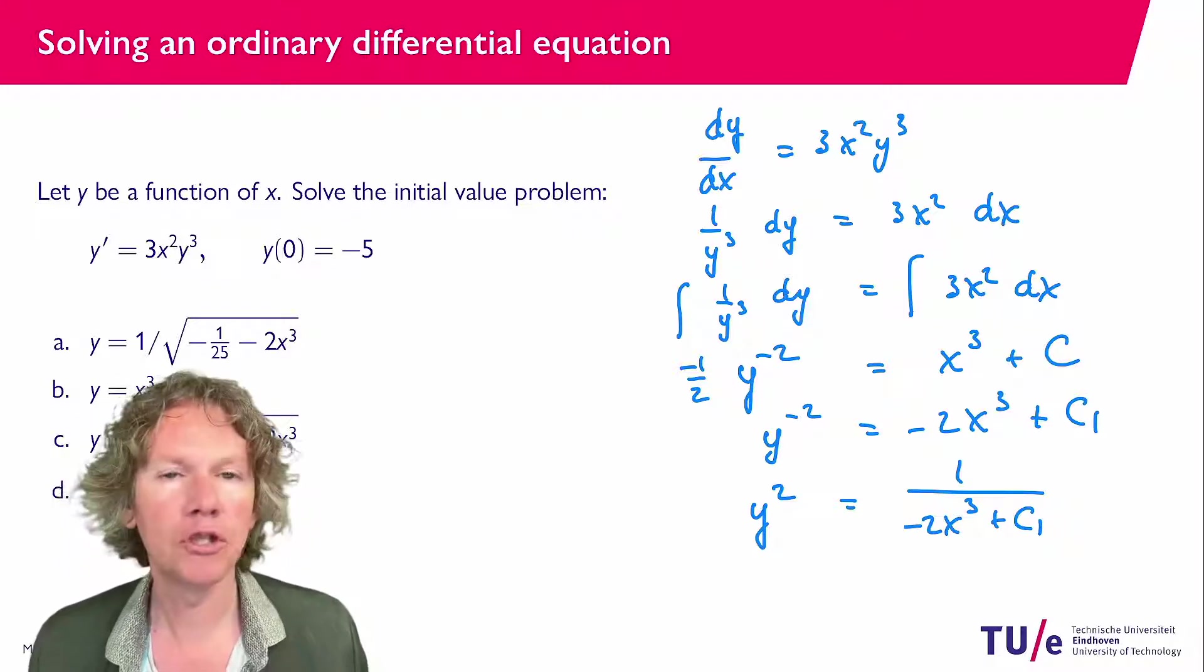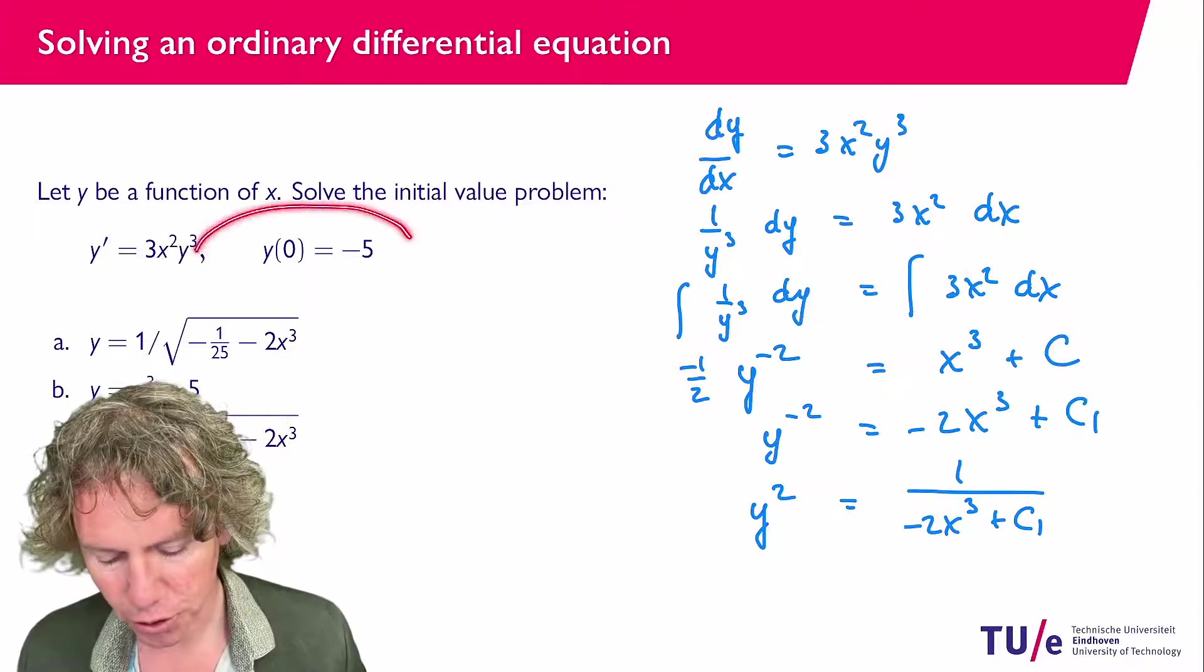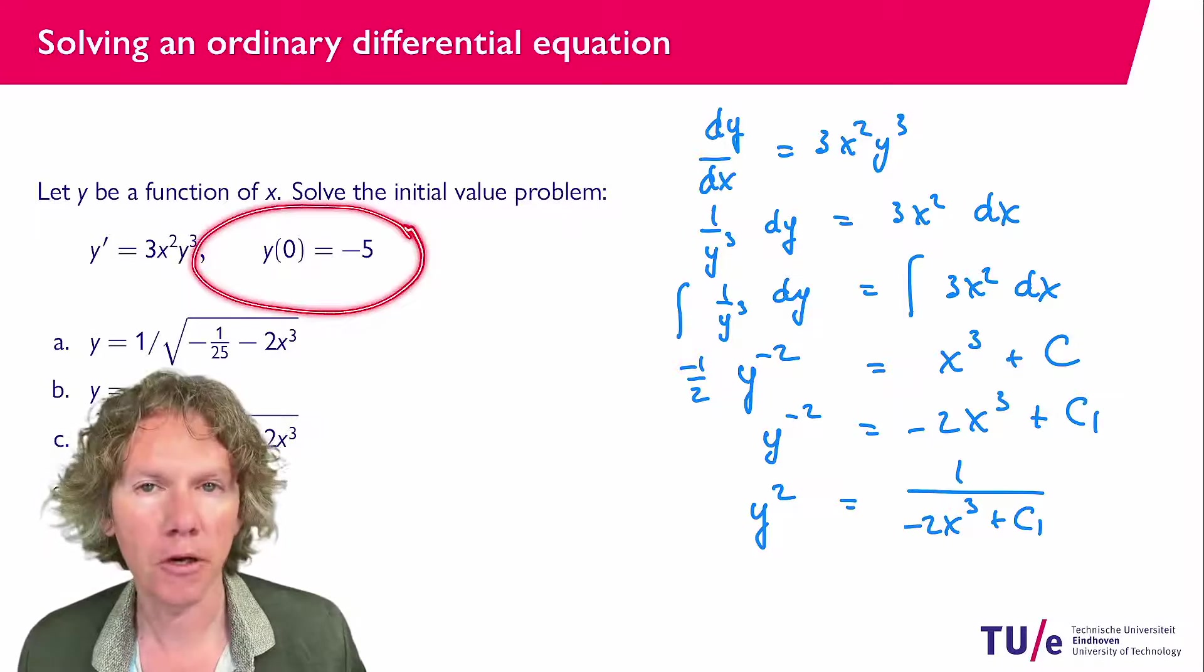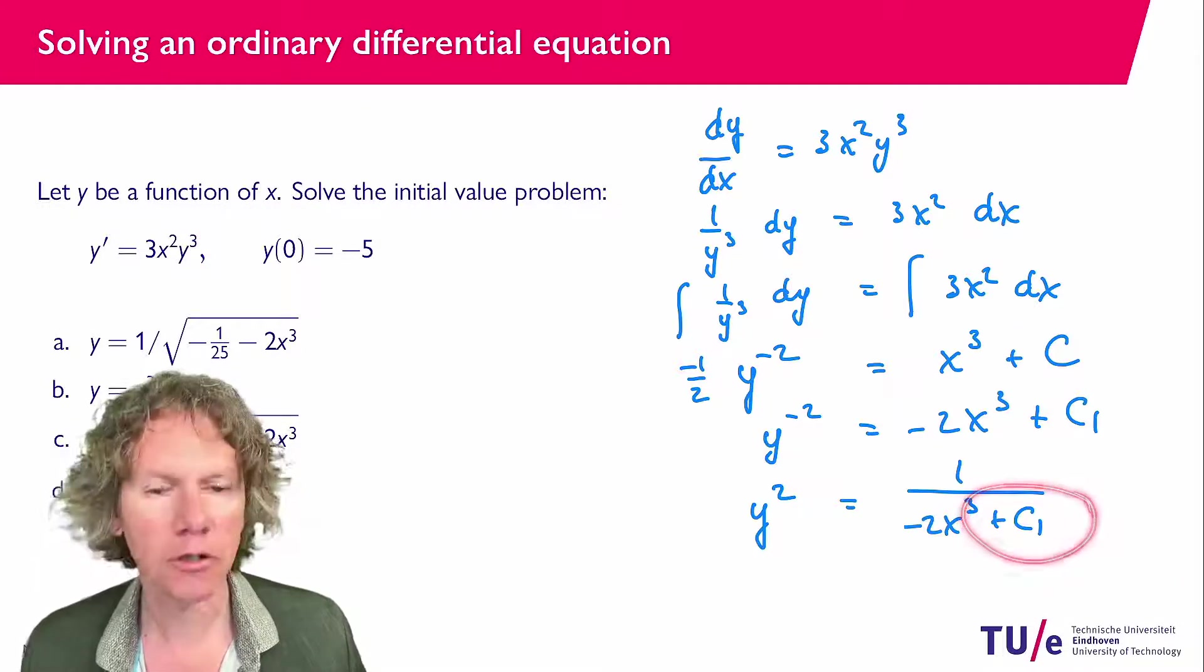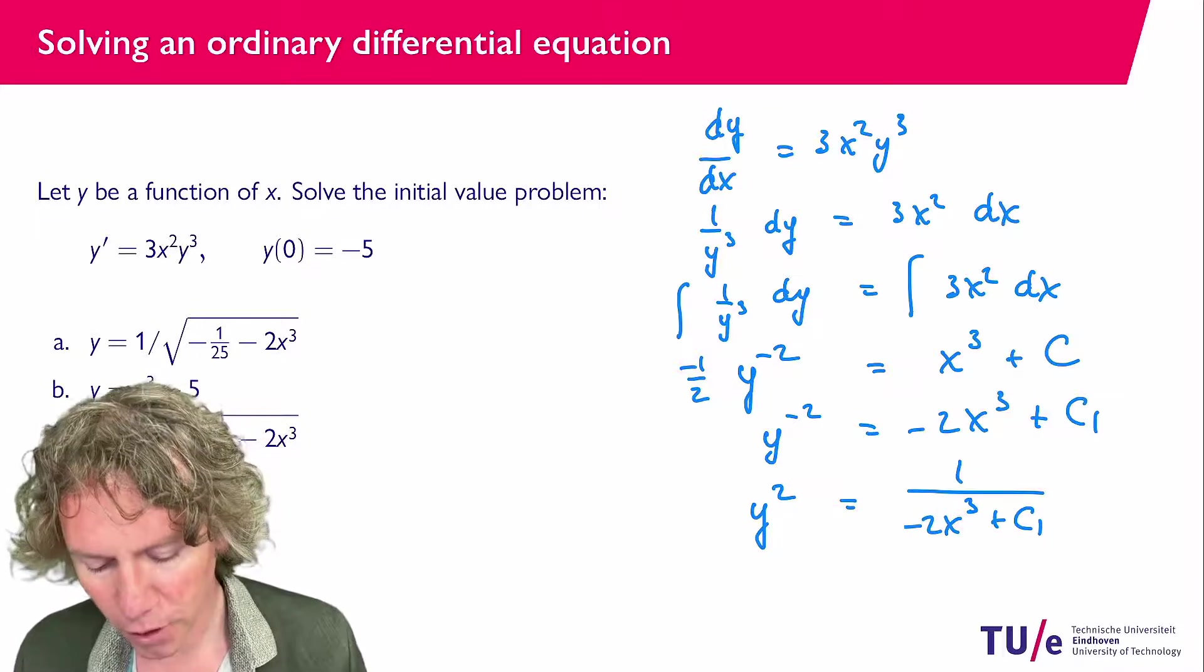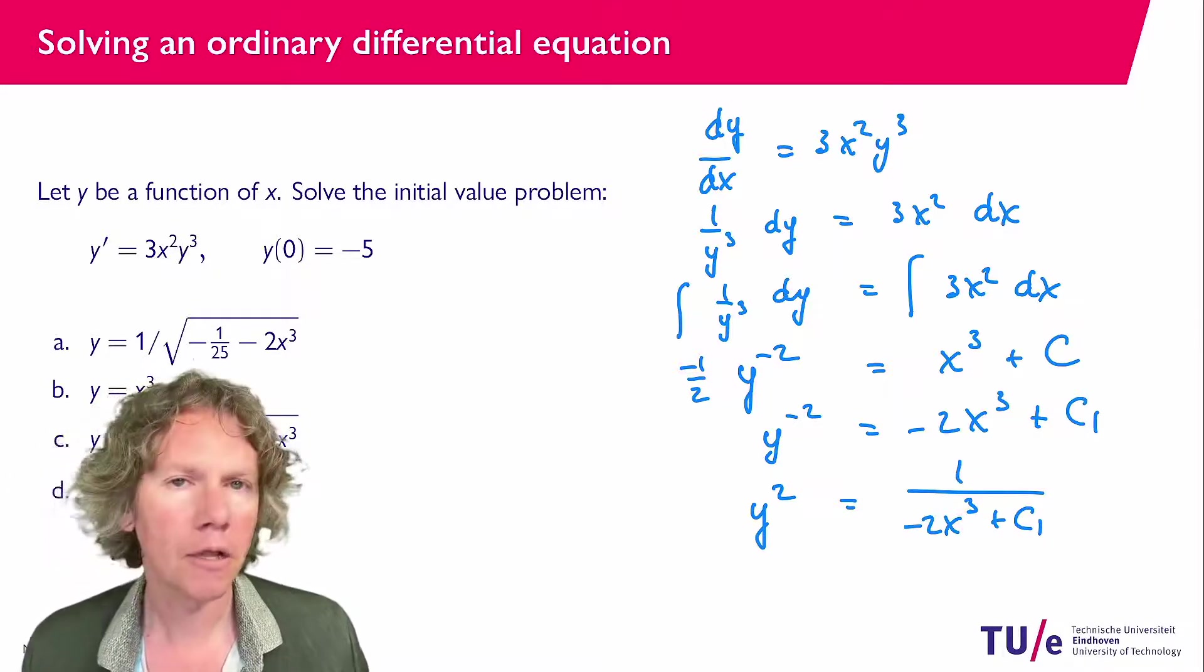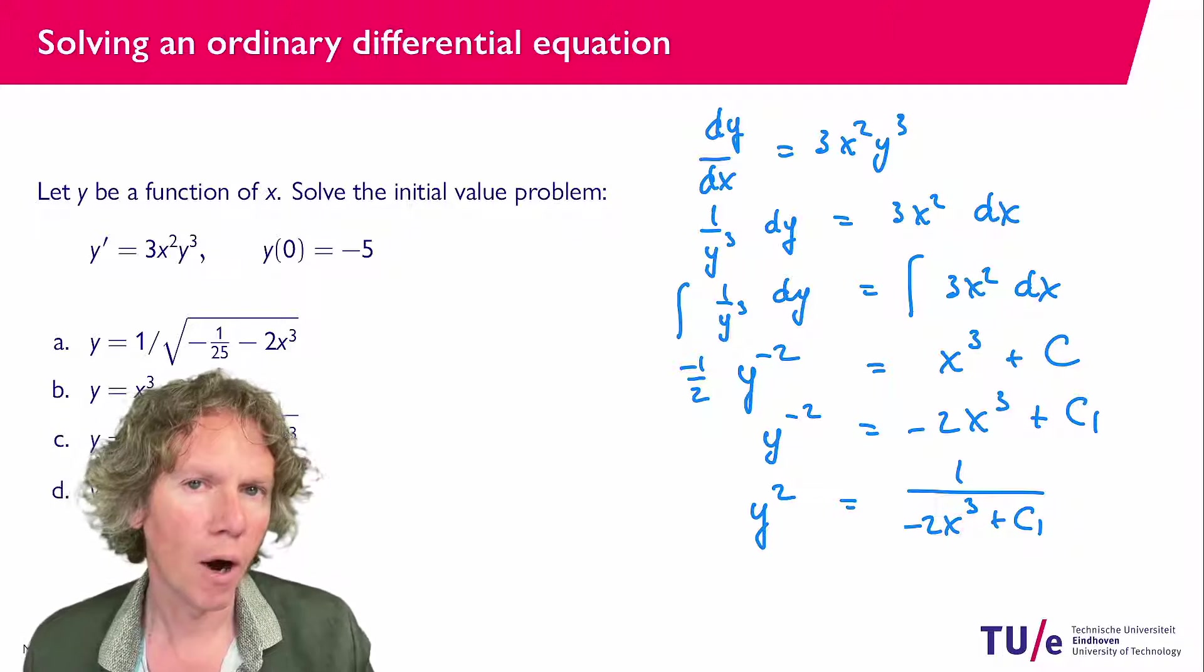And what I haven't used yet is the initial condition here y(0) equals minus 5 so by using that I will be able to find the constant c1 in here but before I do that I would not like to have y squared with y.